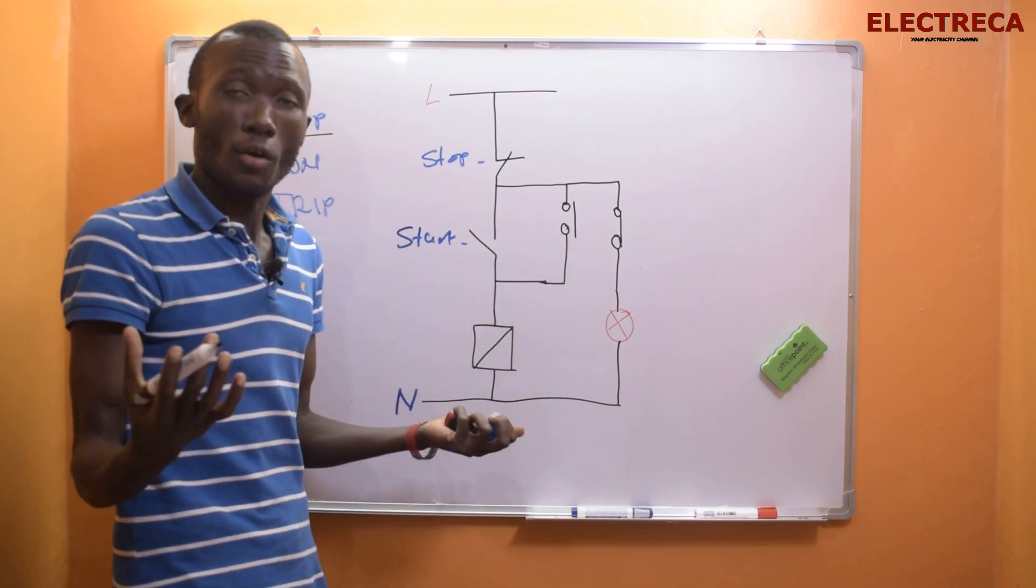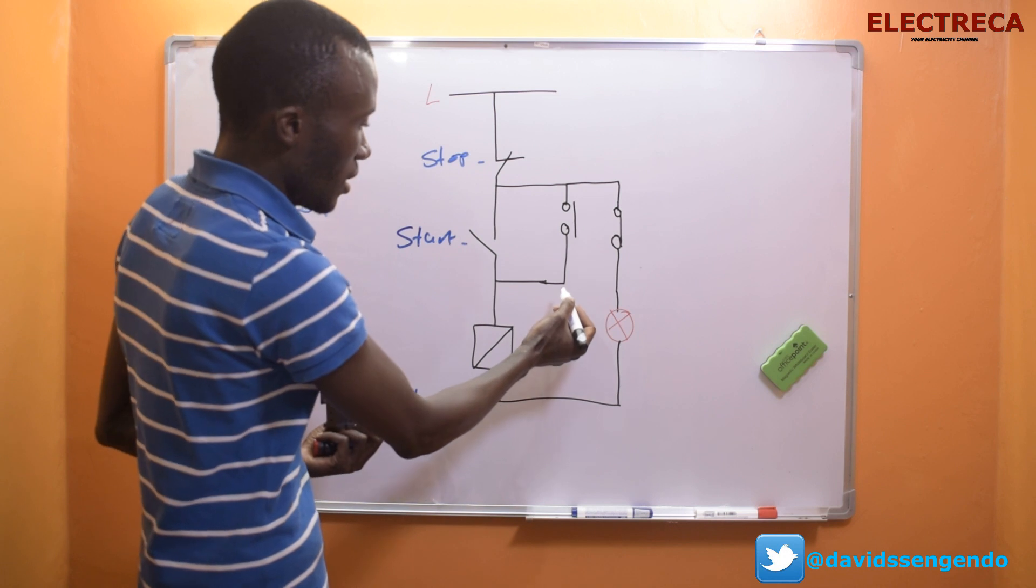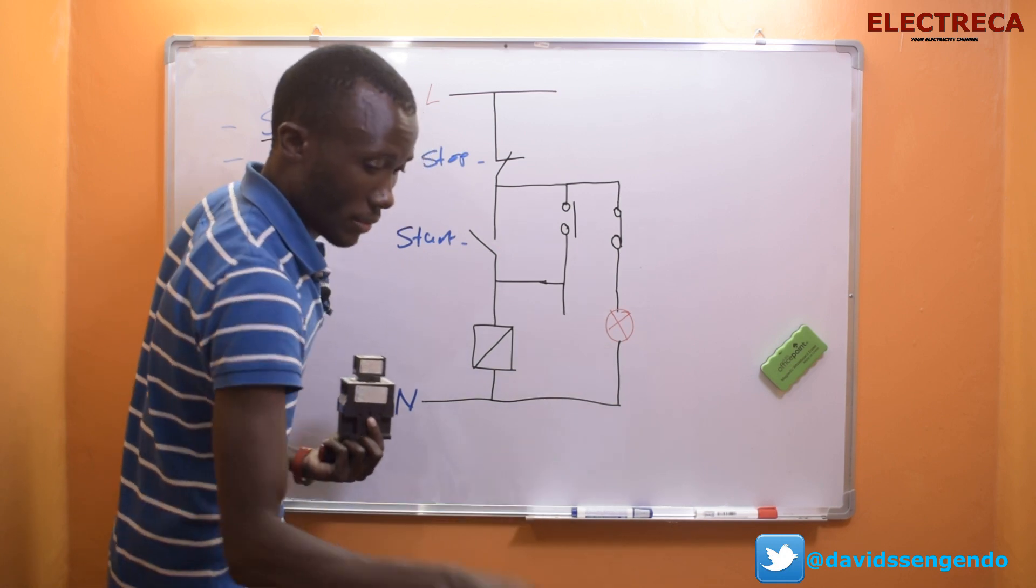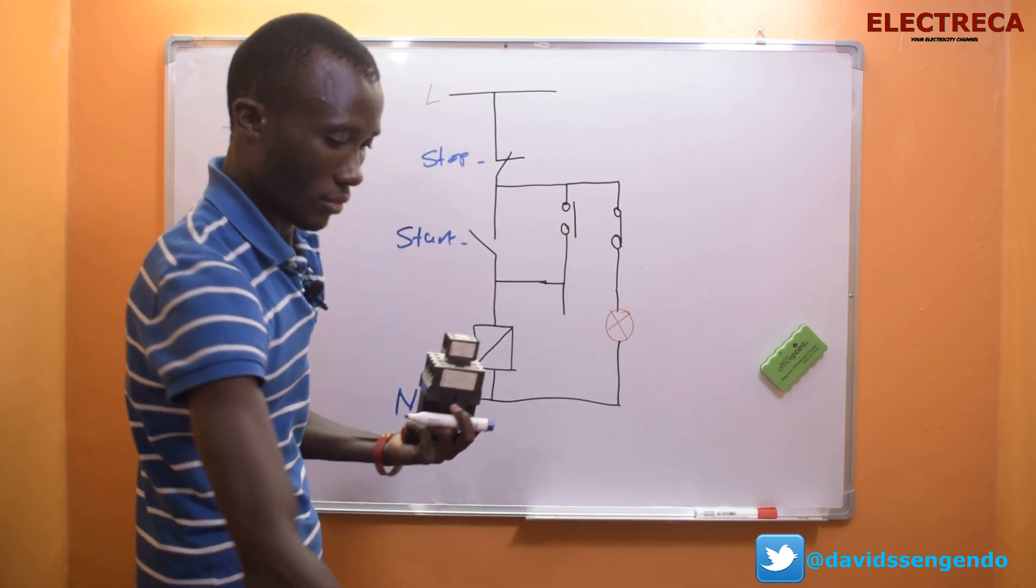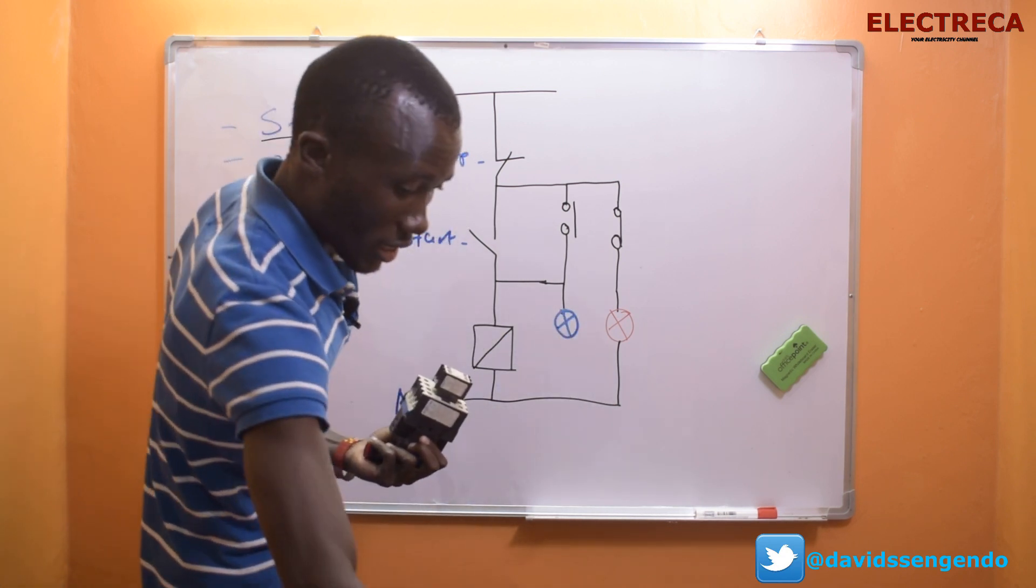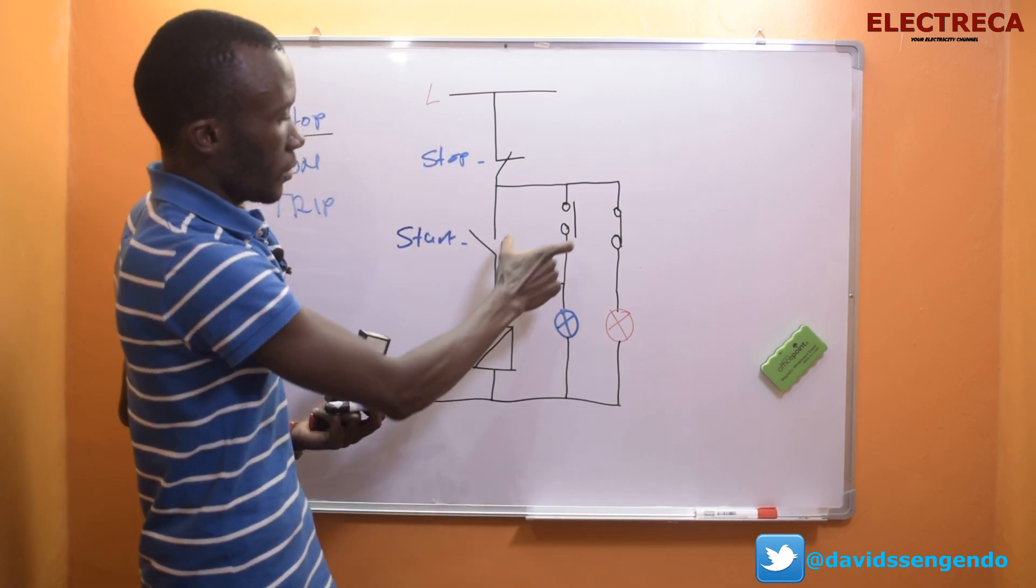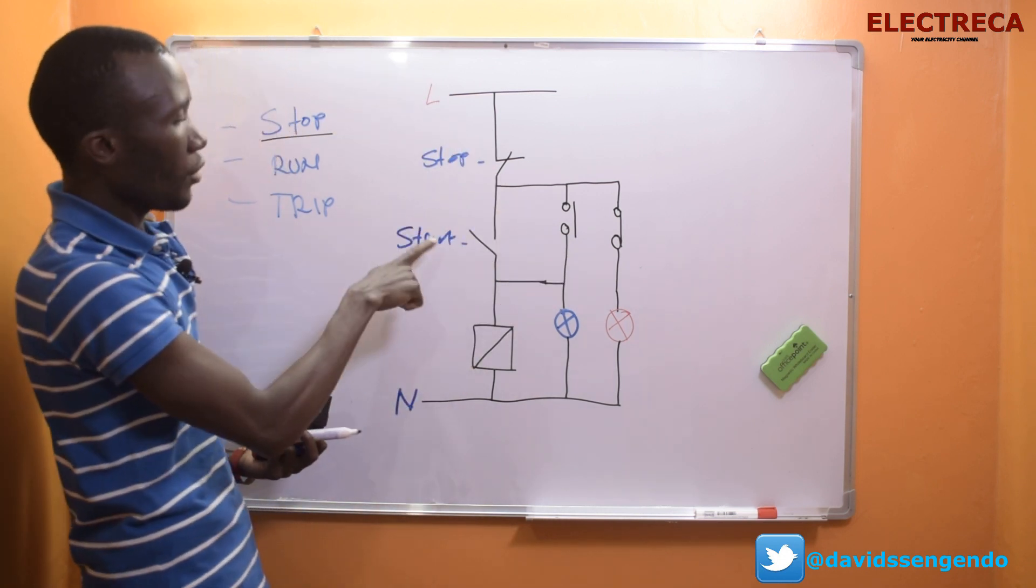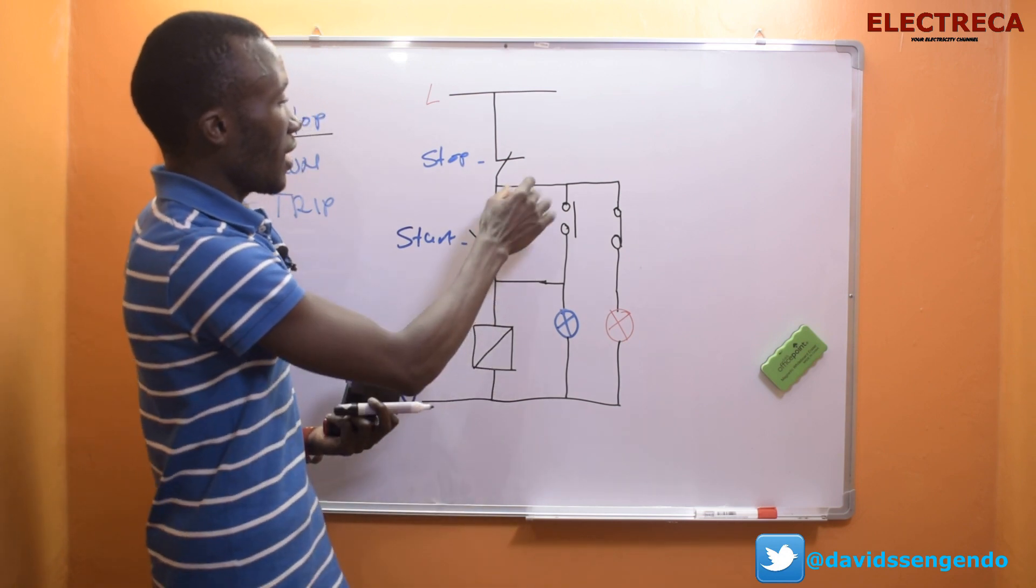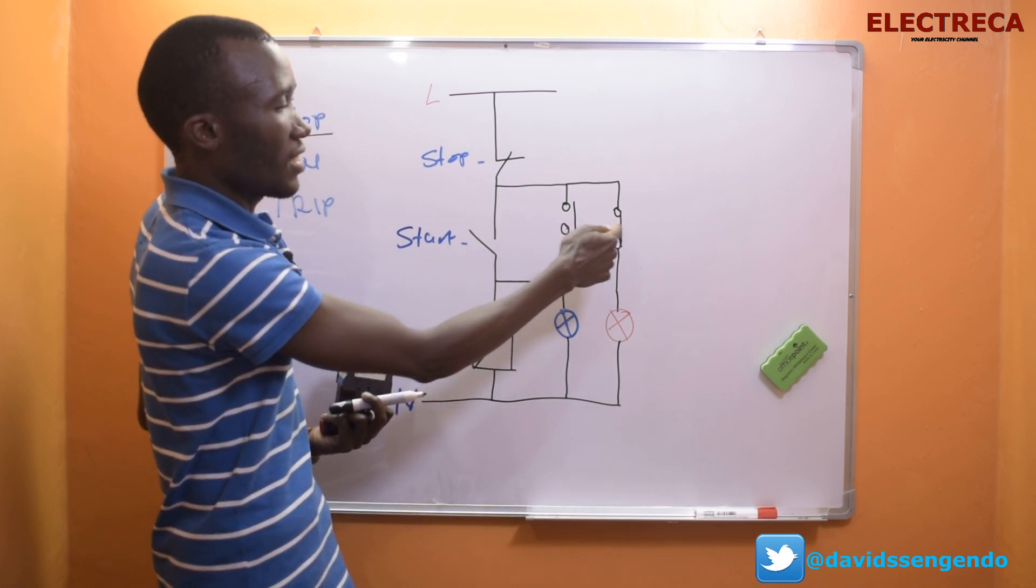When you're connecting run, you use normally open contact. Again on this contactor, you can still run and put here your light. This is normally open. Now definitely if you press this button here which is the start, if you press it our circuit will energize.